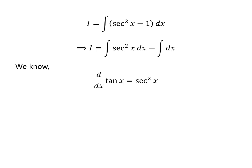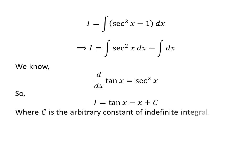We know the derivative of tangent of x is equal to square of secant of x — the video card in the upper right corner explains how to find this derivative, and the link is in the description. So tangent of x is the antiderivative of square of secant of x, and x is the antiderivative of 1. Thus, I is equal to tangent of x minus x, plus capital C, which is the arbitrary constant of the indefinite integral. Never forget to add this constant at the end of any indefinite integral.